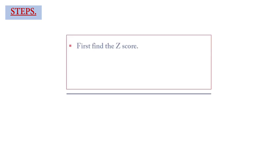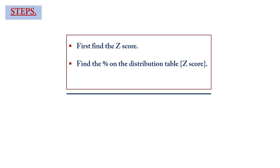The steps involved in using normal distribution are: first, find the z-score; then use the z-score, which is a percentage, to find a value from the distribution table; and then either subtract or add to 50%. We use 50% because the distribution is symmetrical, with the mean at the 50th percentile, meaning both left and right have equal measurements.